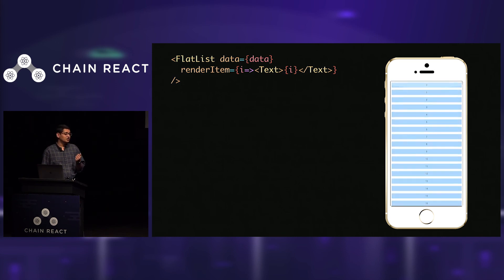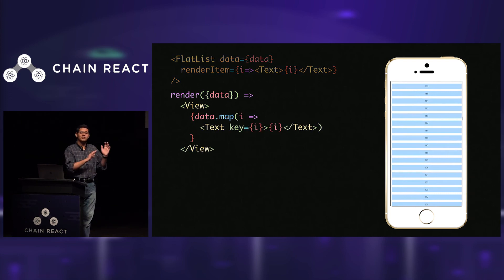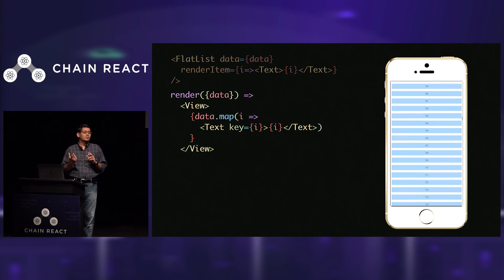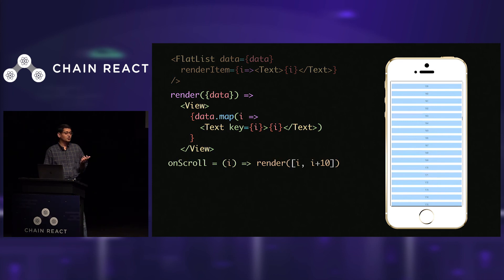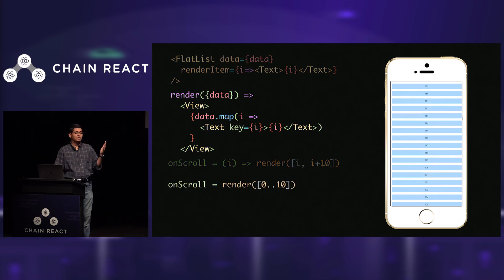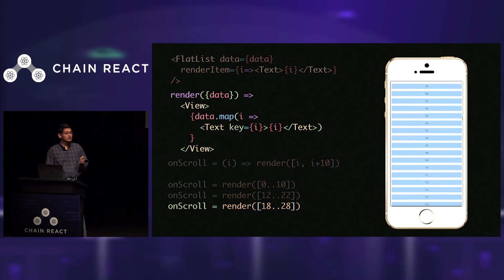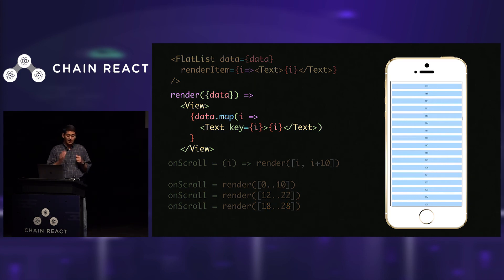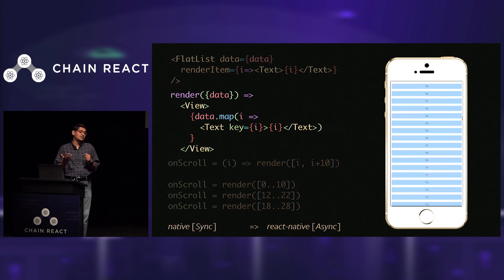Let's dig deeper into this problem. How is a flat list really implemented? It does virtualization — effectively it only renders a subset of the data. Depending on the scroll position, it picks and renders a window of the data, say items 0 to 10, and so on. The key thing to notice is the scroll action itself is synchronous. When you scroll, you expect that action to be synchronous. On the other hand, React Native itself is asynchronous, and this impedance mismatch is the primary cause of the problem.